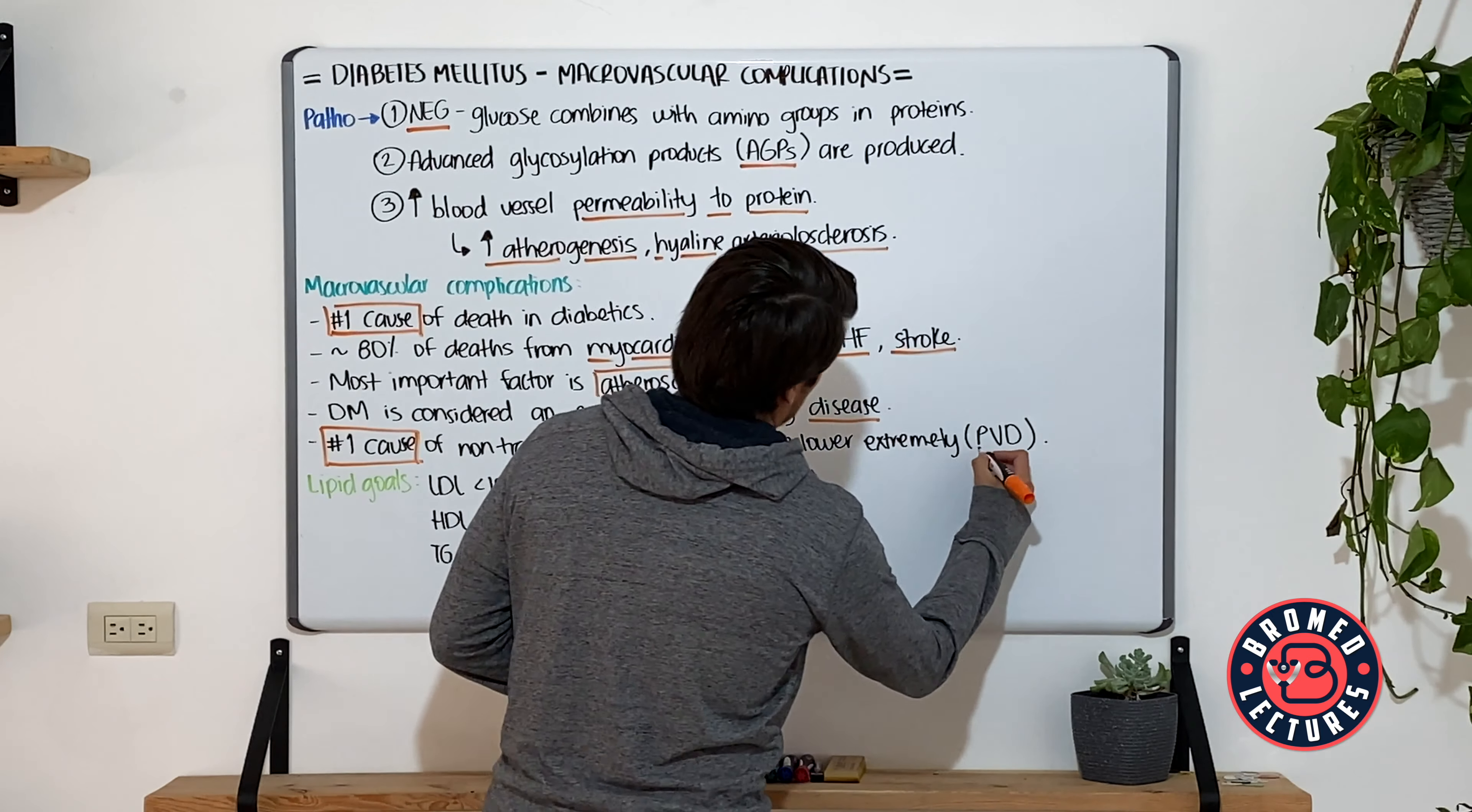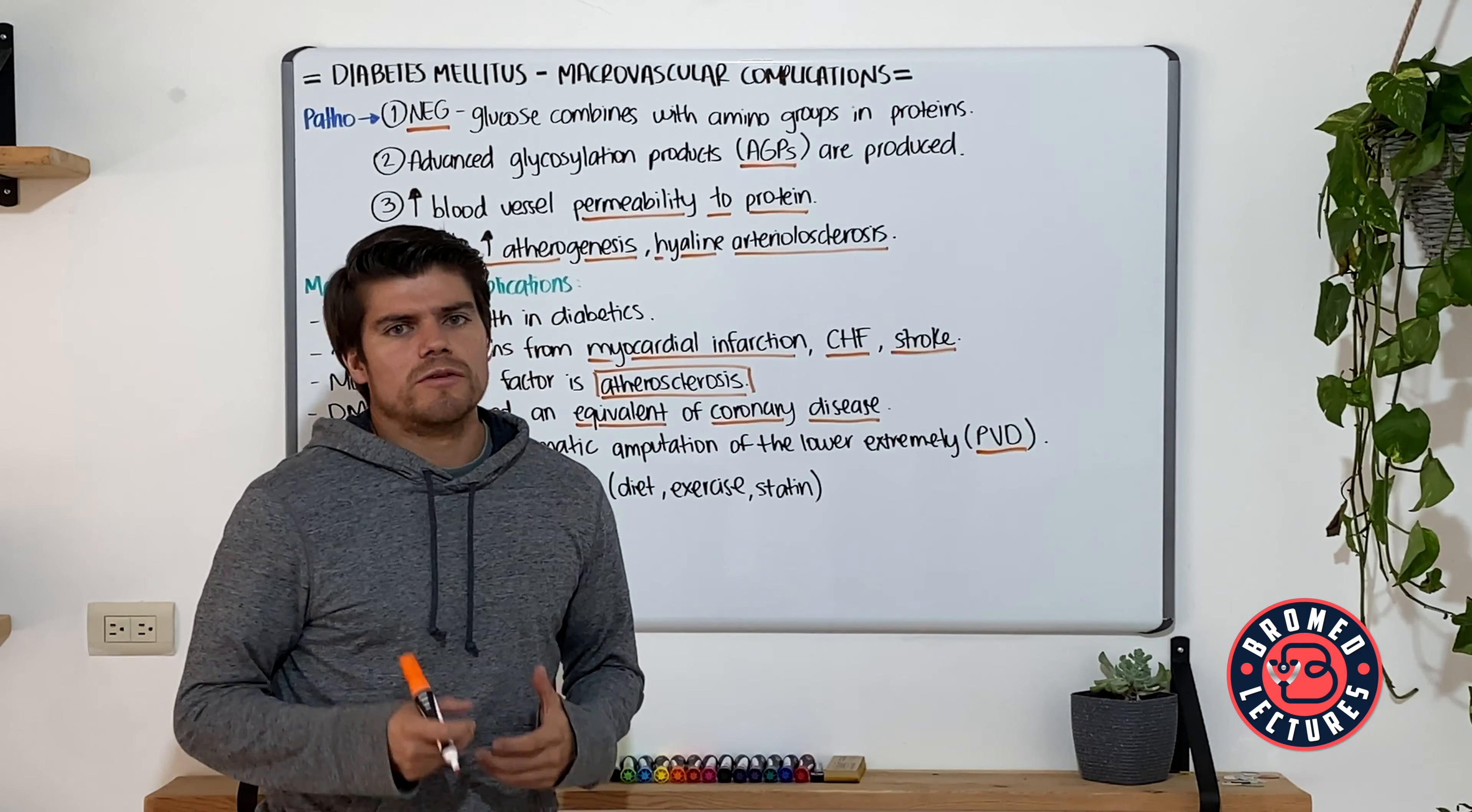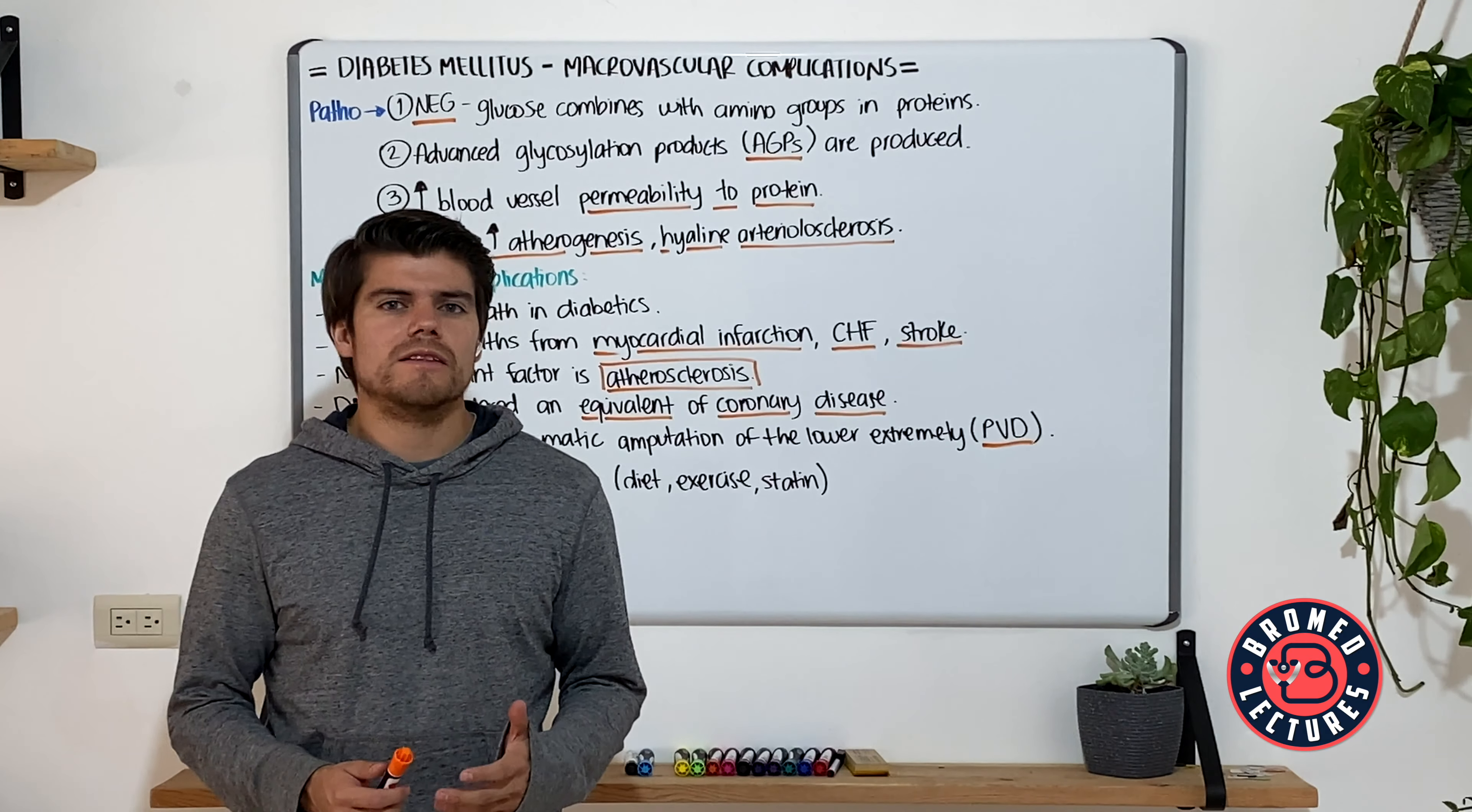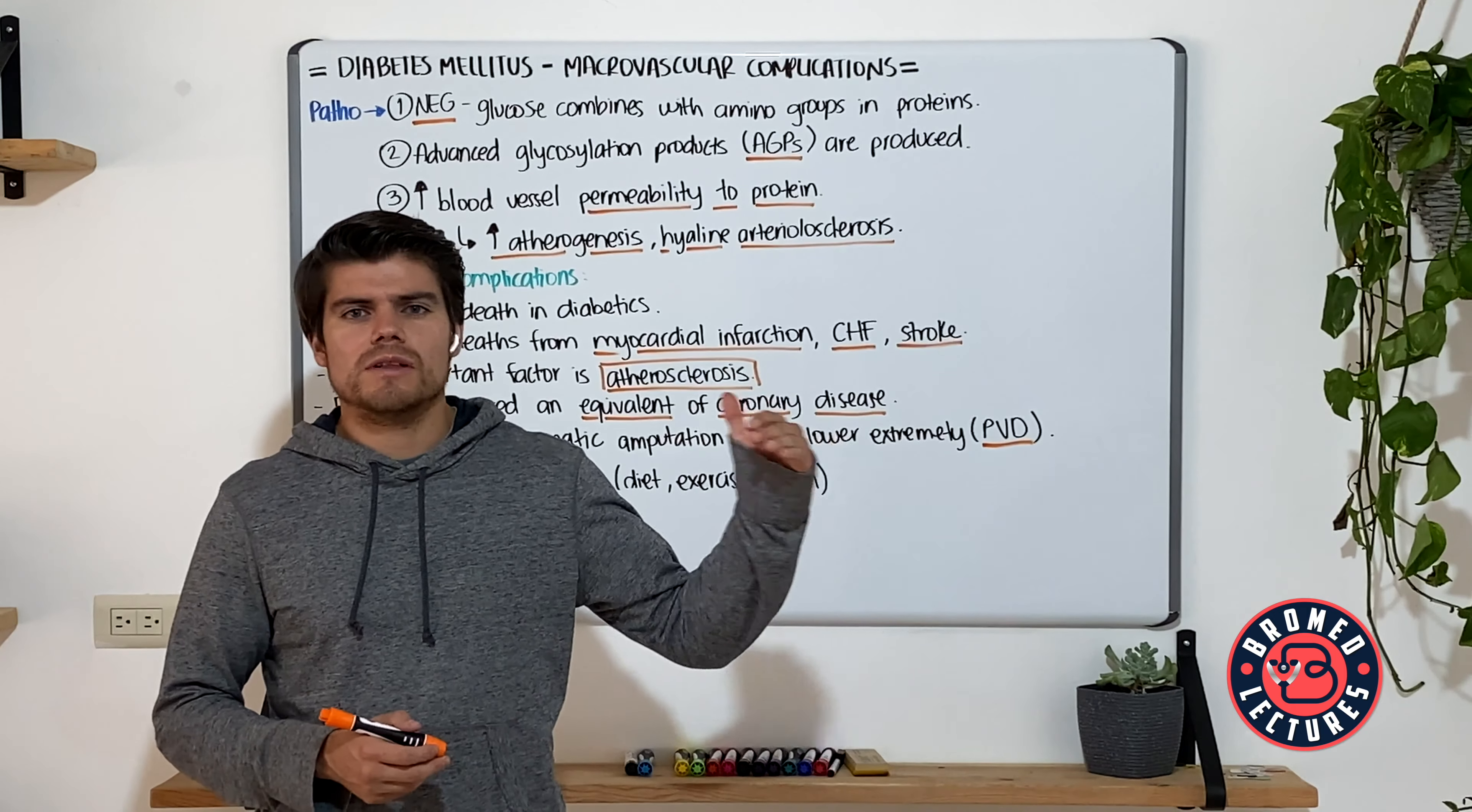And of course, remember that it is the number one cause of non-traumatic amputation of the lower extremity. And this has two components. It is because of the peripheral vascular disease that atherosclerosis is going to cause, and of course, because of the neuropathy and the microvascular complications that we're going to talk in another video.